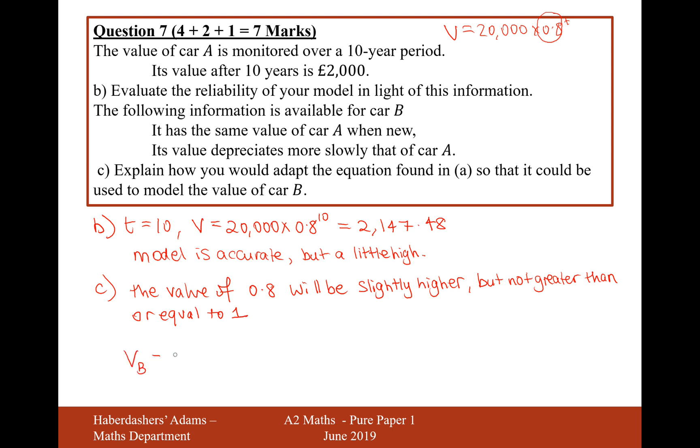Where B is going to be a number that's in between 0.8 to 1. So it's going to be higher because the depreciation is less, so less is being knocked off of it each time.